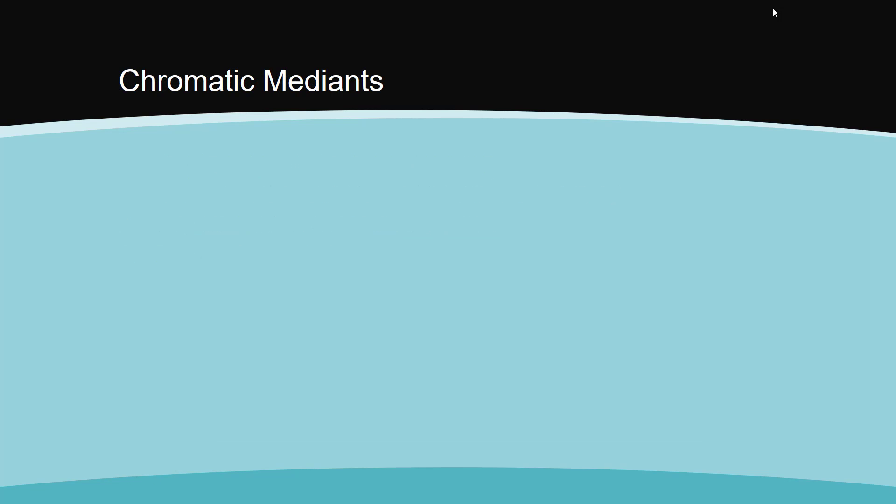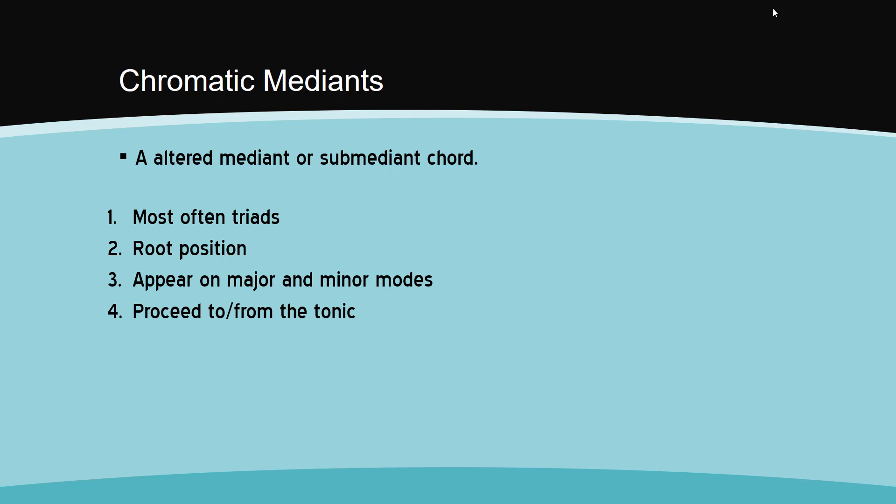The final topic is the chromatic mediant. This is an altered mediant or sub-mediant chord, so it affects triads built on the 3rd or 6th scale degree. Chromatic mediants are most often triads, but 7th chords can occur. They are most commonly written in root position. They can appear in both major and minor modes, and they most often proceed to or from the tonic harmony. They still function in the same manner as the mediant or the sub-mediant. Use the context of the chords around them to determine their function as either tonic or predominant.